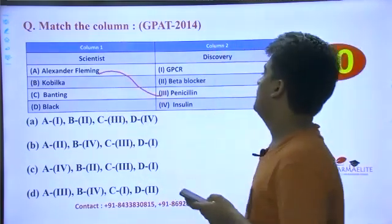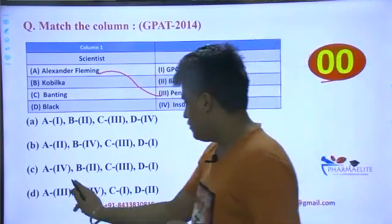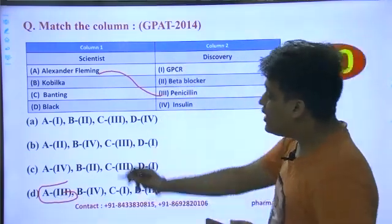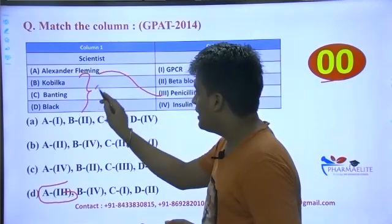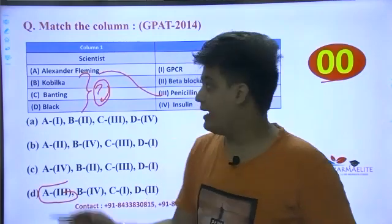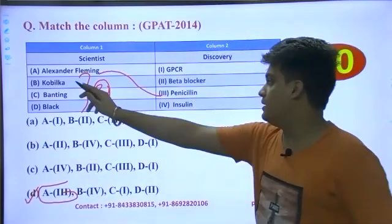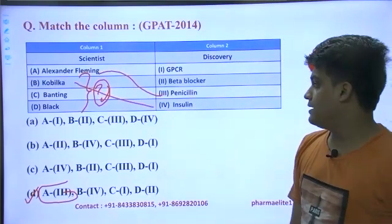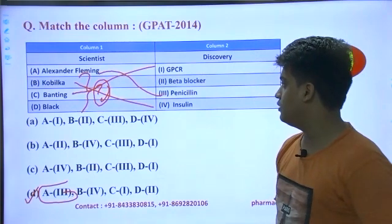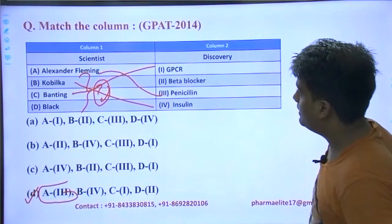For this question, A is 3 — this is the only option where A is 3. So do I need to solve the rest? No — I already know A is 3, so this has to be the answer. Yes, for option B it would be 4. The binding is basically GPCR and the black refers to beta blockers. This is straightforward.